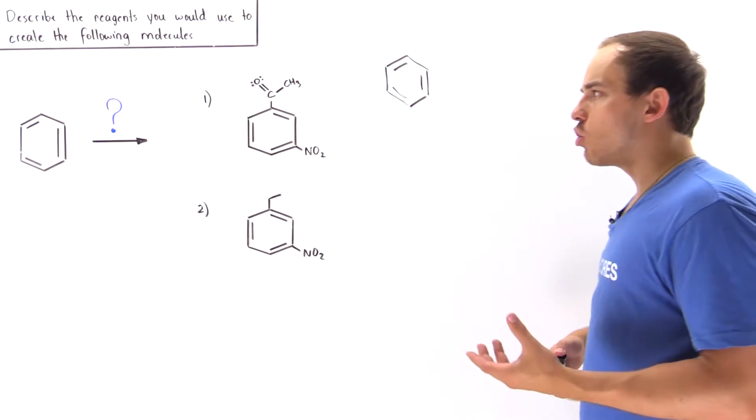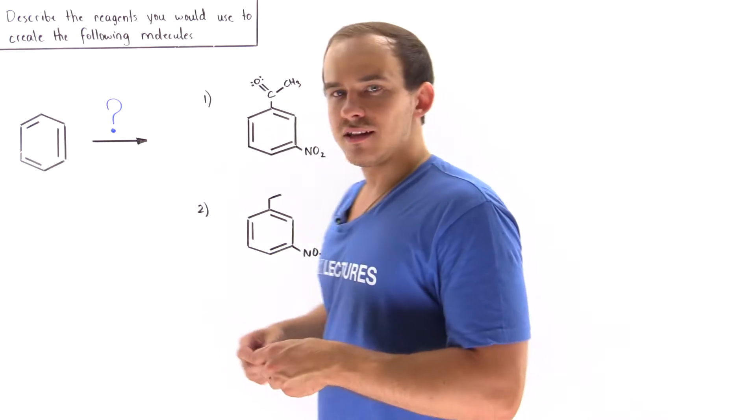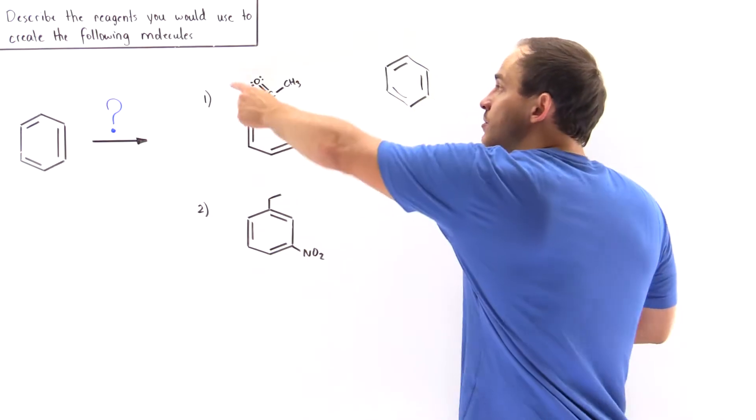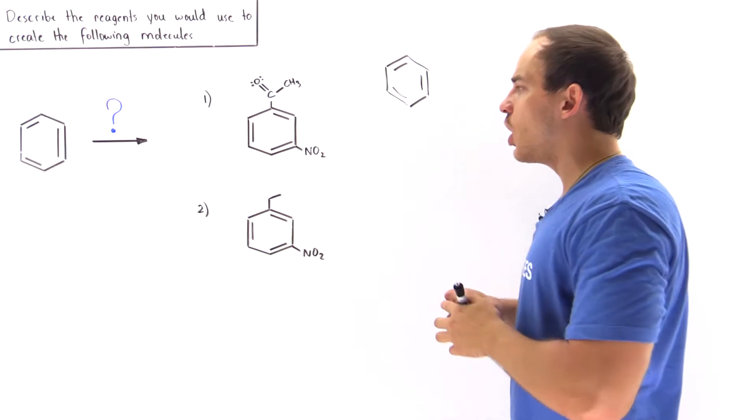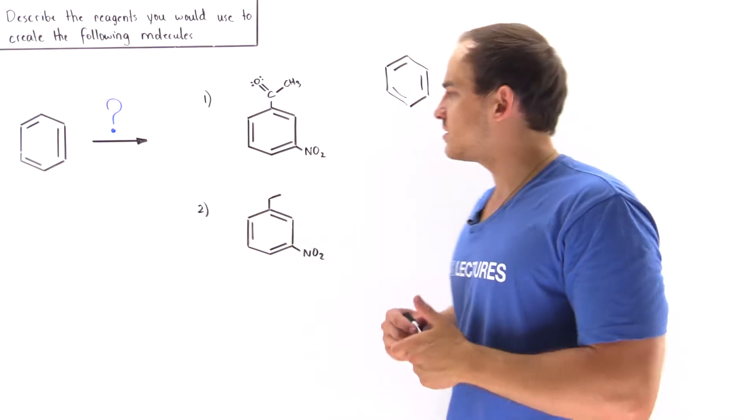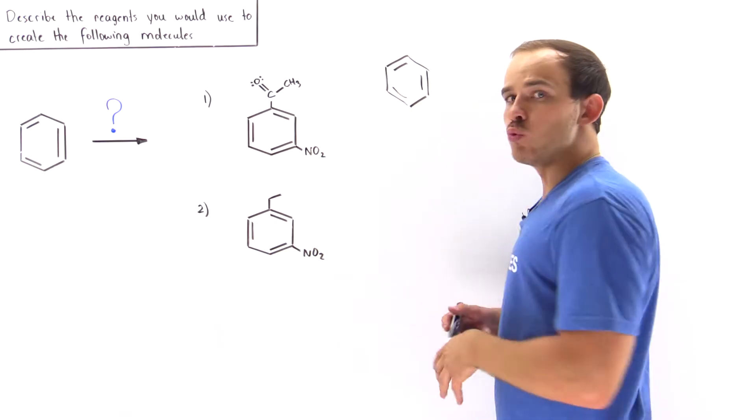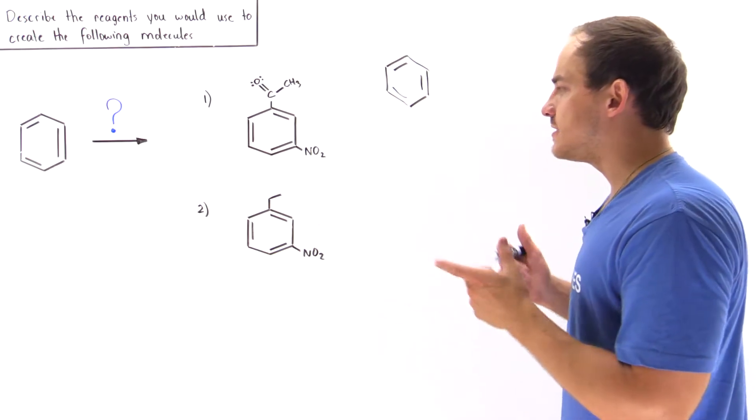Now the question is, should we undergo the Friedel-Craft acylation to first add this group, or should we undergo the nitration of benzene to add this group? Which step should we place first?